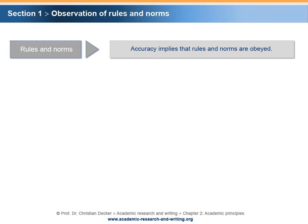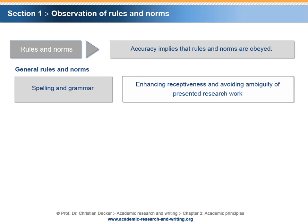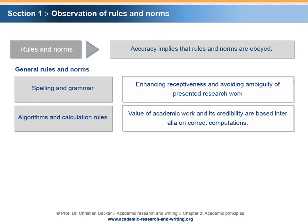The principle of Accuracy implies that rules and norms are obeyed. There are certain general rules and norms that exist inside as well as outside of the academic world or scientific community. Correct spelling and grammar is important in order to enhance receptiveness and to avoid ambiguity of presented research work. It should be self-evident that calculations should be free of any mistakes. The value of academic work and its credibility are based inter alia on correct computations.